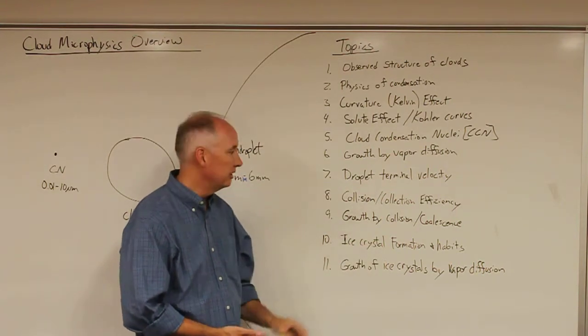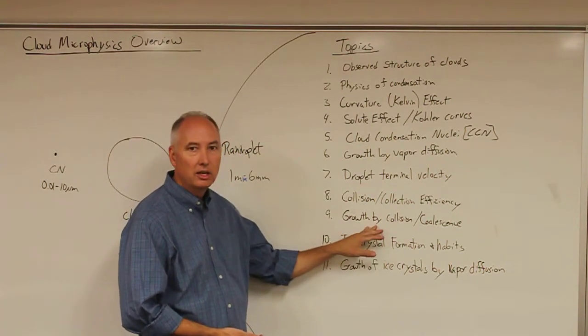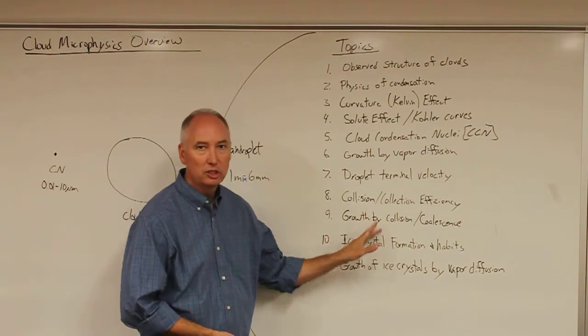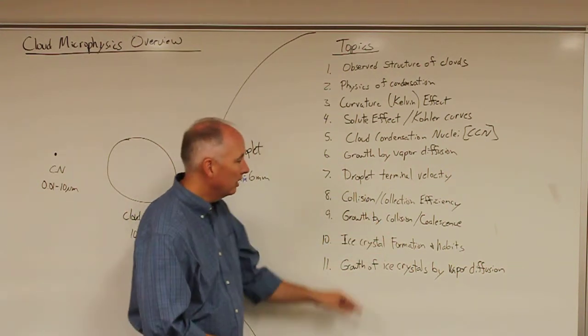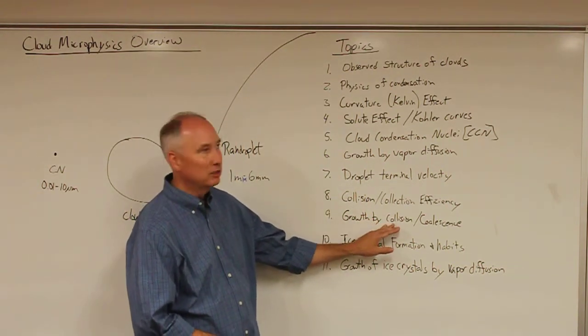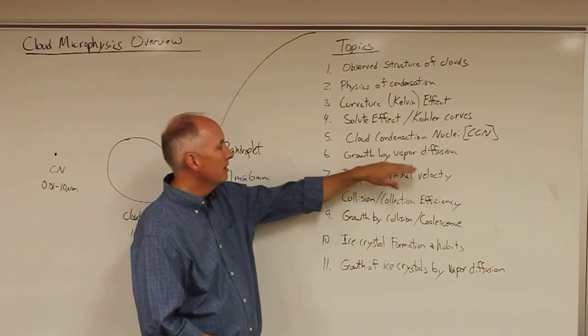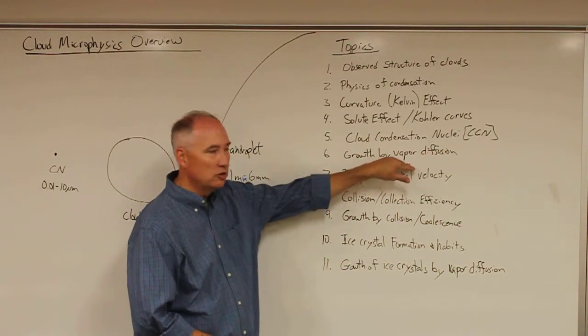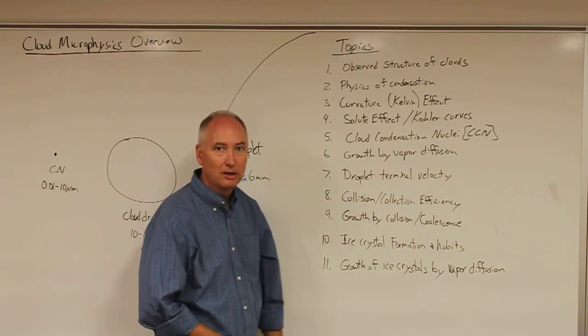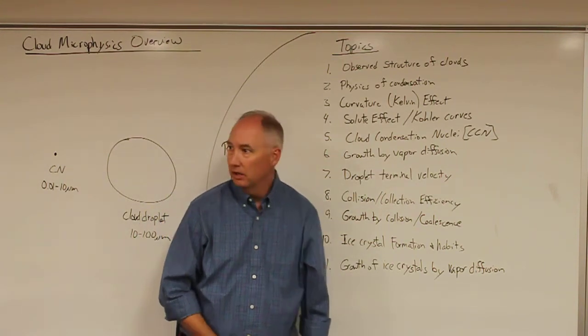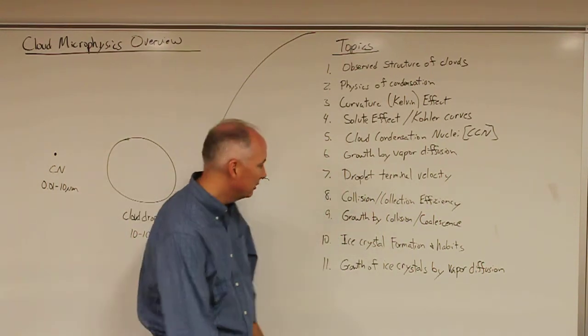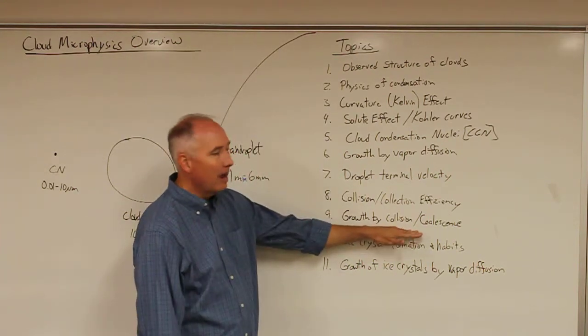Then we can develop a model that will describe the growth rate by collision coalescence mechanism and compare that growth rate from collision coalescence to the growth rate by vapor diffusion, and understand which of these mechanisms is primarily responsible for the formation of cloud droplets.